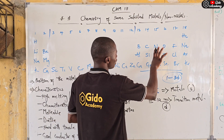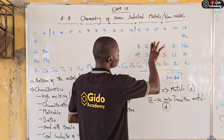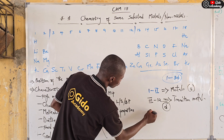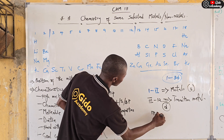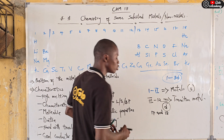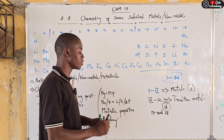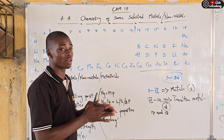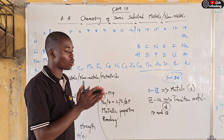Now let's identify the non-metals. The non-metals are basically group 17 and group 18. All group 17 elements and all group 18 elements are non-metals.